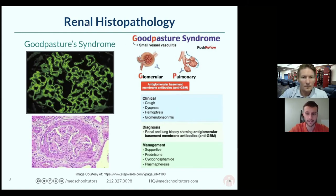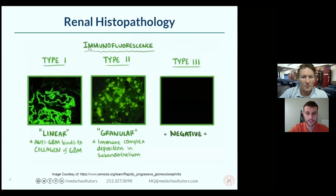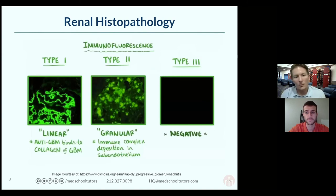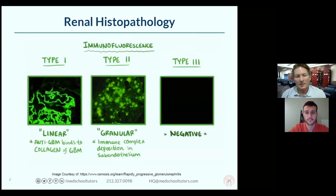As for the granular appearance — it's kind of like a spray-paint picture or dots everywhere. The important difference between linear and granular immunofluorescence is in the linear pattern you have deposition along the basement membrane in a continuous ribbon, whereas granular represents immune complex deposition scattered throughout.